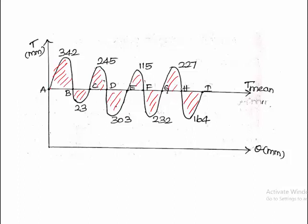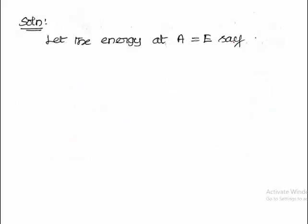In the turning moment diagram, fluctuation values are given but we don't know the energy stored at points A, B, C, D and up to I. Let us assume the energy at point A is E. By taking the energy value at point A as reference, we can calculate the energy stored at different points from B to I because we know the area under these curves.